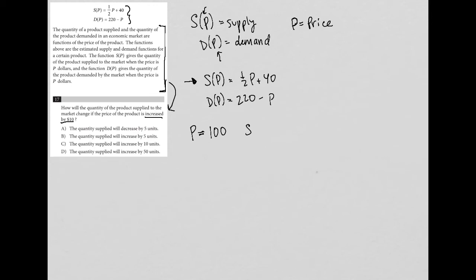What is S of P, or S of 100? S of 100 equals one-half times 100 plus 40. All I did was replace P with 100. What's half of 100? That's 50. And what's 50 plus 40? That is 90. So that's my starting point.